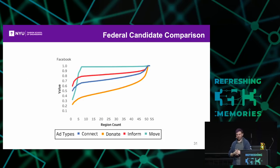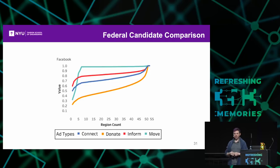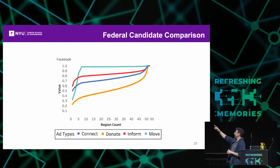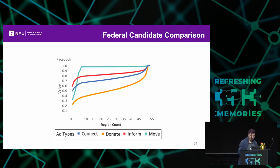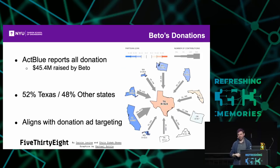Another analysis we did on the federal candidate ads was to look at, for Facebook in particular, the geographic impression data. We can effectively look at how many states were targeted by each ad. There was no presidential election, so basically all campaigns were operating in one state. If you look at the inform ads, most were shown in a very small number of states—being shown to the constituents actually voting for that candidate. However, the donation ads were fundraising in many more states outside of their constituency.